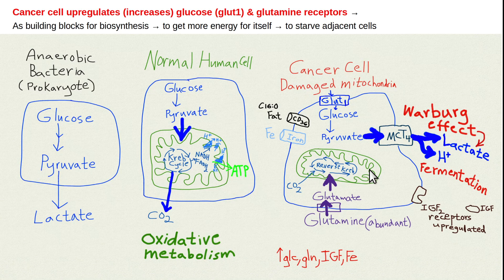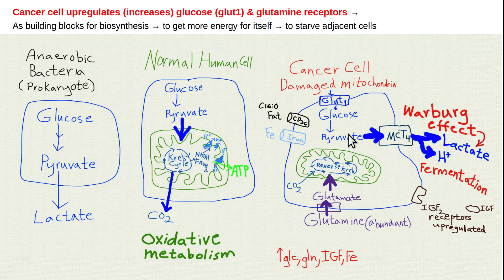A cancer cell, by contrast, can't run its mitochondria effectively for energy. Instead, it pulls in far more glucose — typically a hundred times more than a normal cell like a liver cell. That's why cancer cells are positive on PET scans. This is the core idea of mitochondrial injury transforming a cell into cancer — the metabolic theory of cancer.